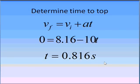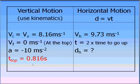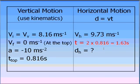This is the time to top. We can now add this to our table. Time to top, 0.816 seconds. Now that we have the information to the top, we can easily work out the time for the whole flight. This will simply be 2 times the time to top. So 2 times 0.816 gives you a total time of 1.63 seconds.